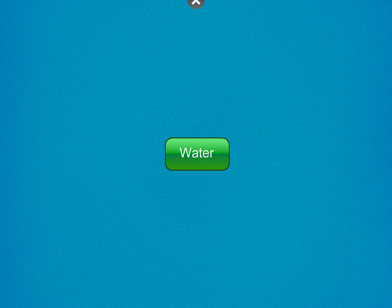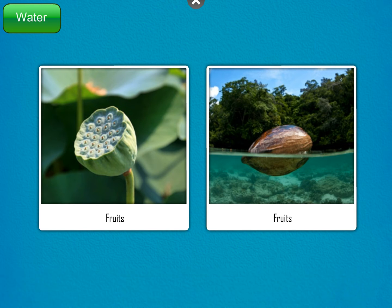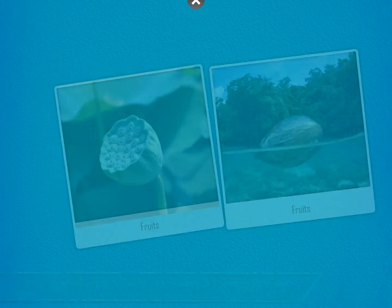Water. The fruits of most water plants have waterproof coverings that allow them to float and disperse their seeds by water. The spongy part of the lotus fruit and the fibrous outer covering of a coconut enable them to float on water.